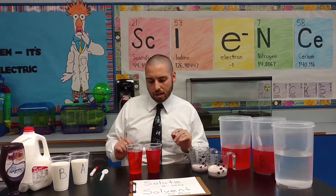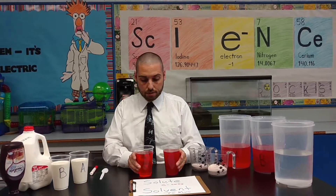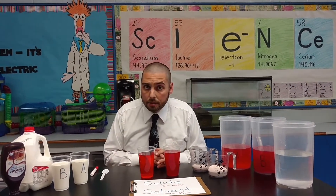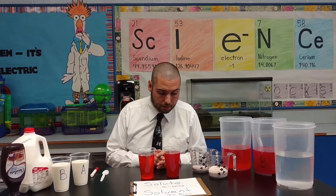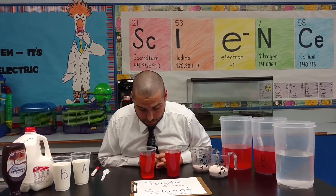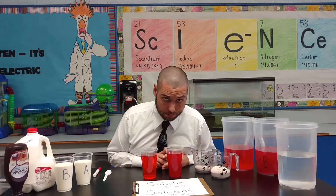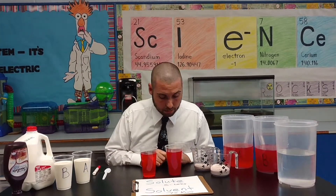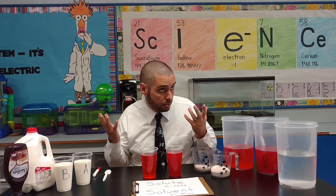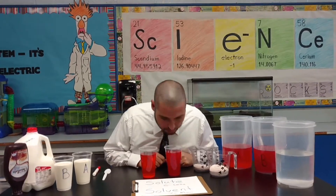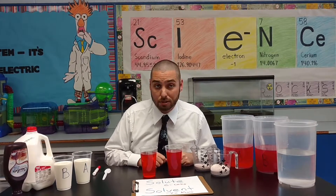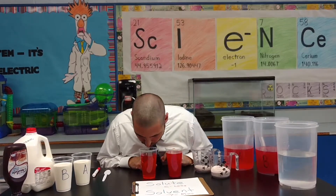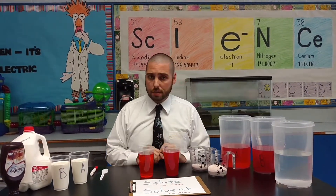We're going to make some qualitative observations. First, let's look at the difference. Cup A is lighter — I can see to the bottom. Cup B is darker — I cannot see to the bottom. That's using our eyes. Now let's check and see if we can smell a difference. Cup B has a stronger smell. Cup A has a weaker smell.